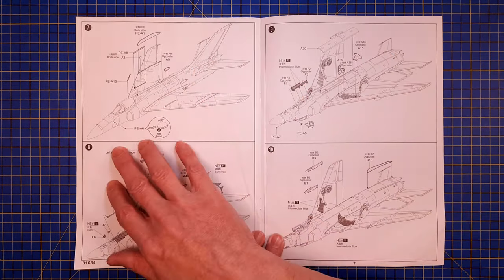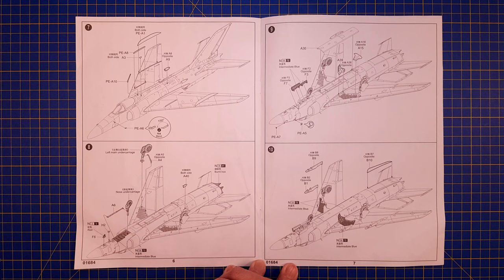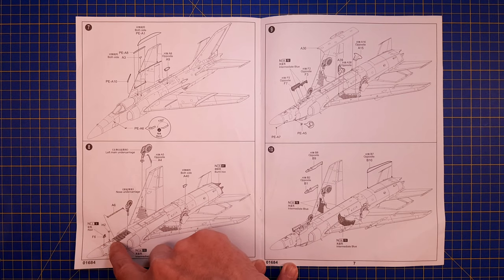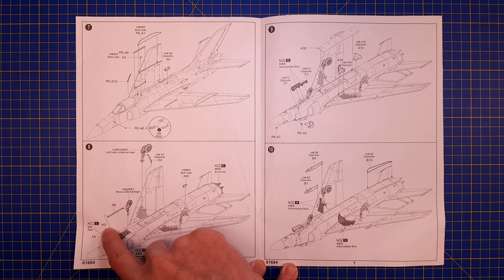A couple of small parts here - antennas and some kind of light, maybe a navigation light.